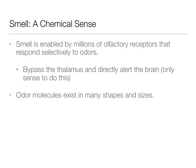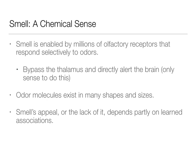Odor molecules really exist in many shapes and sizes, and again, this is that key-and-lock system where different receptors are going to respond exclusively to one kind of odor molecule. A smell's appeal — or lack of it — really depends on learned associations. A lot of things smell good to you, but not because they universally smell good. They smell good to you because of positive associations with them. Things that smell sweet smell good because you have a positive association with sweet tasting good. Things that smell bad have a negative association or are unfamiliar.